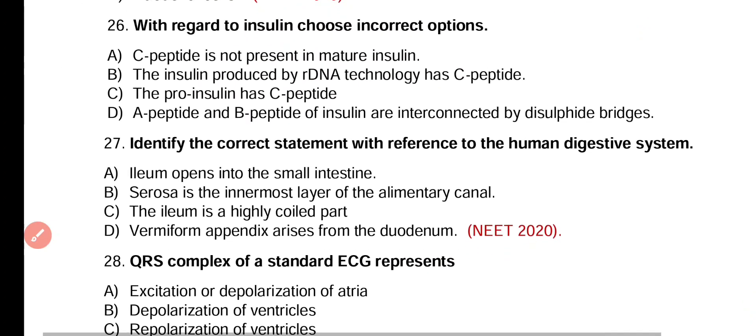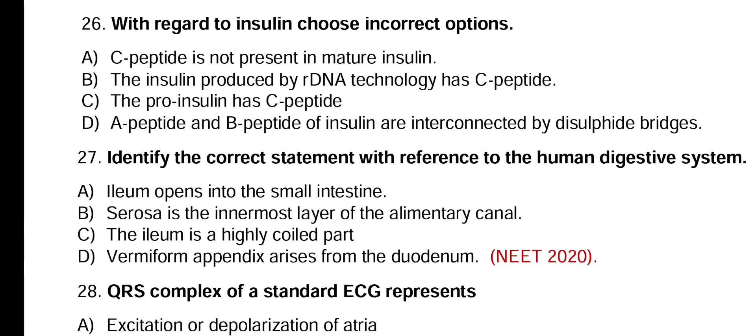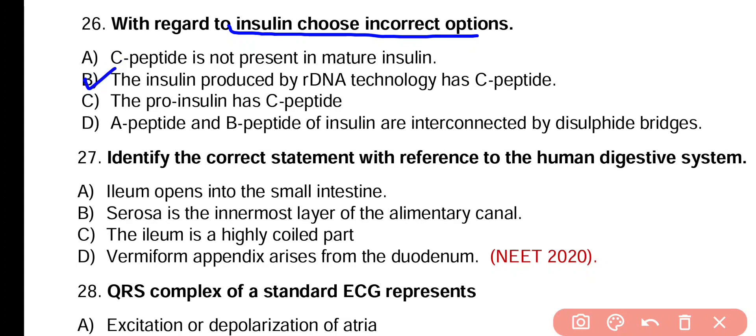Question number 26. With regards to insulin, choose the incorrect option. C-peptide is not present in mature insulin. Insulin produced by recombinant DNA technology has C-peptide. Pro-insulin has C-peptide. A-peptide and B-peptide of insulin are interconnected by disulfide bridges. The incorrect option is B. Insulin produced by recombinant DNA technology does not have C-peptide.